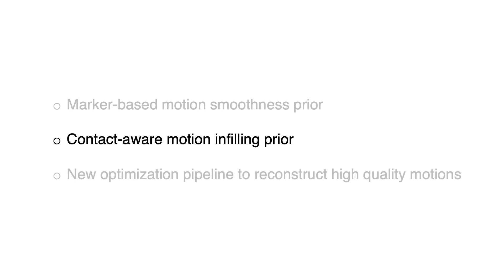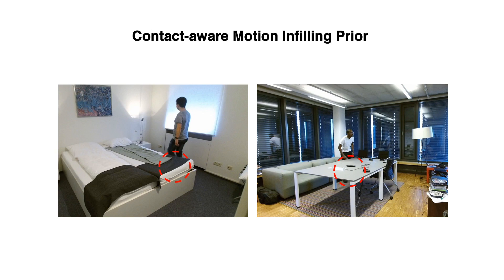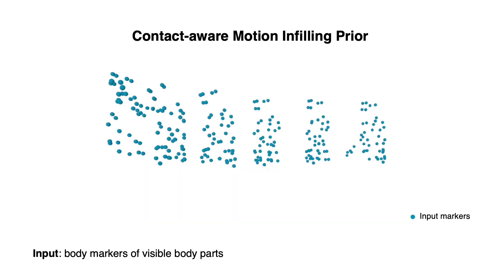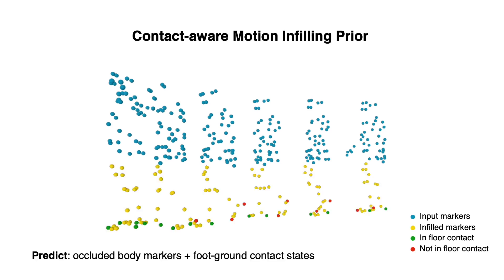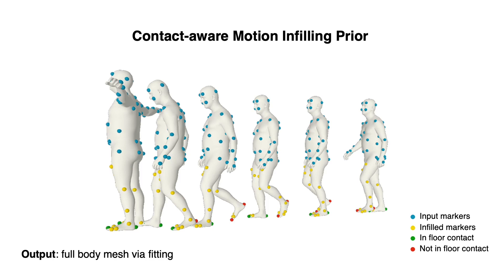We also propose a contact-aware motion infilling prior to deal with body occlusions. When humans interact with 3D scenes, there are frequent occlusions from a monocular camera view, which results in invalid motions such as the foot-ground skating problem. Given the body markers of the upper body part, we focus on recovering the motion of the lower body part, which is often occluded by scene objects. The motion infiller jointly predicts occluded markers and foot-ground contact states. The green and red spheres denote whether the corresponding foot marker is in contact with the ground or not. Then we fit the SMPL-X body mesh to the predicted markers by optimization.